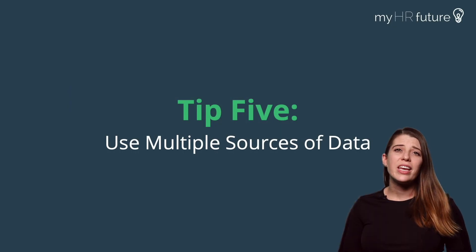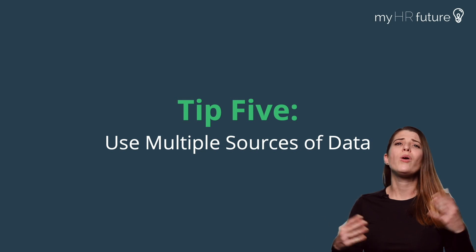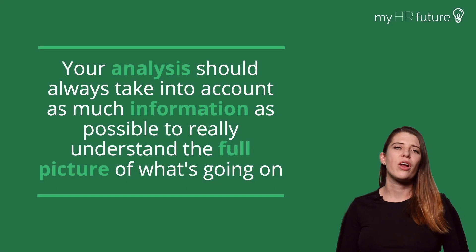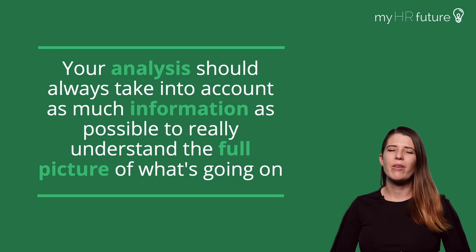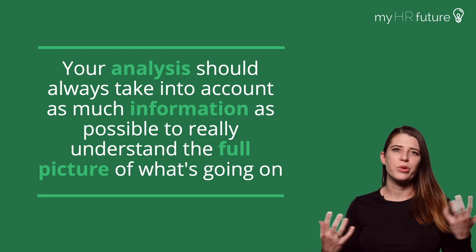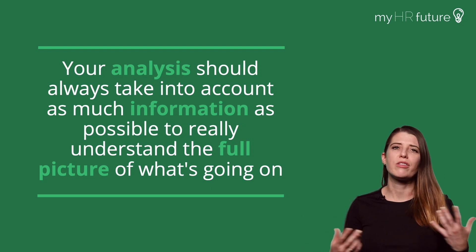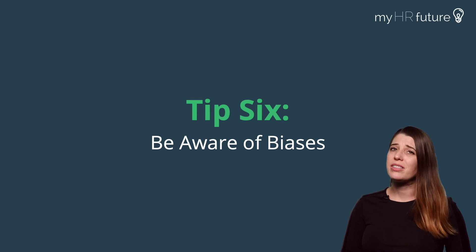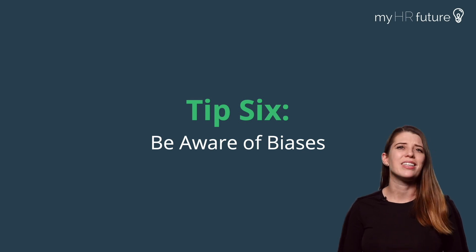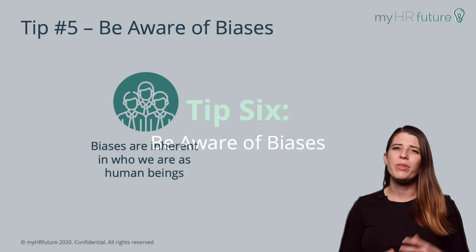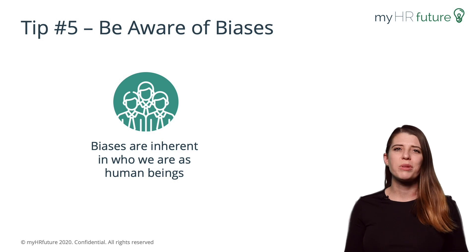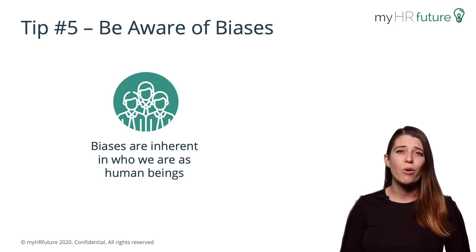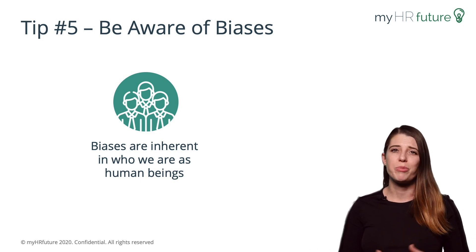Tip number five is that you should use multiple sources of data. Your analyses should always take into account as much information as possible to really understand the full picture of what's going on. And tip number six is to beware of biases. They're inherent in who we are as human beings, and they're something to watch for and control as you're working with people data.